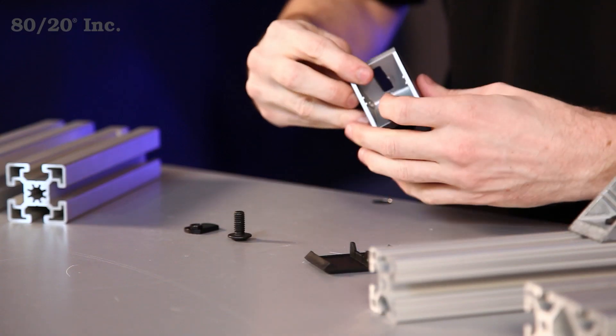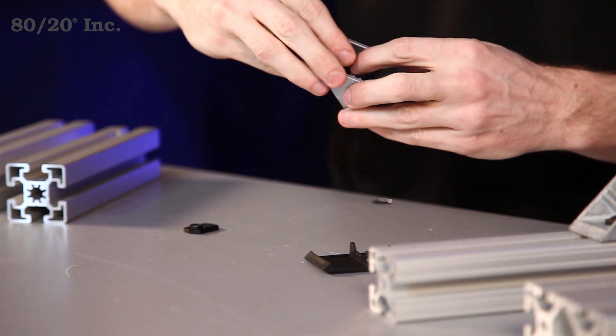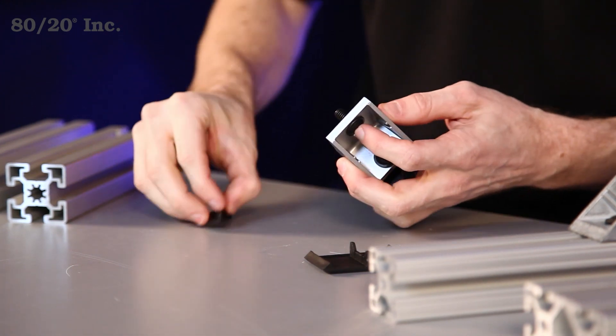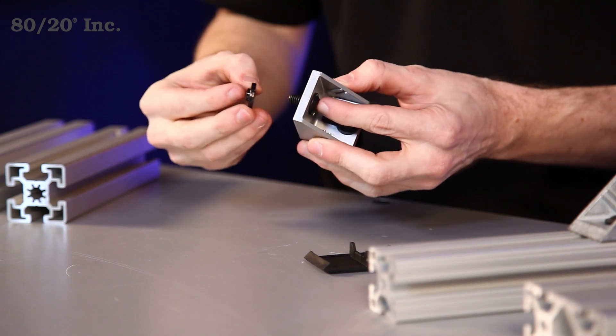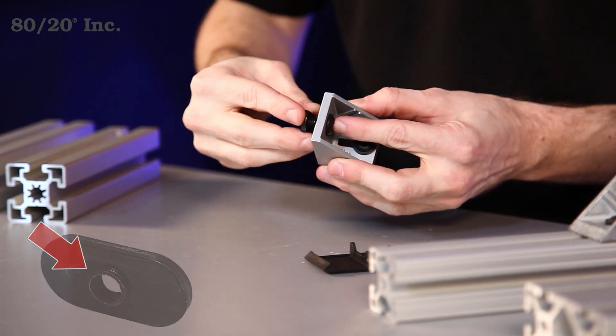Now to get started, we'll take this bracket and put a bolt and a T-nut into it. Now it's important when you're putting the T-nut in to make sure the pilot projection is facing away from the bracket.